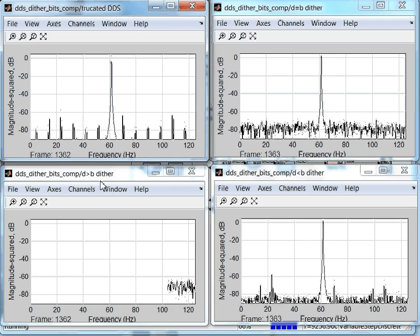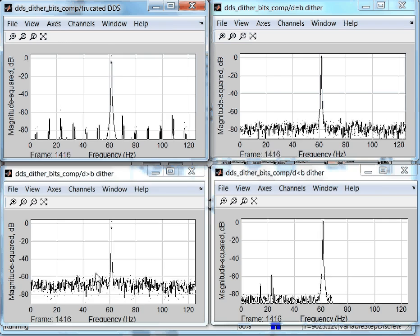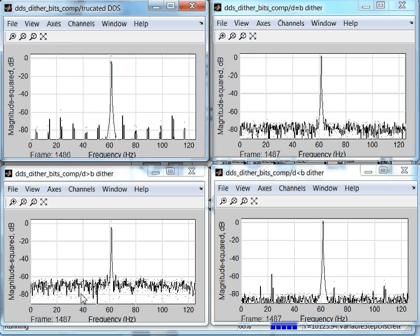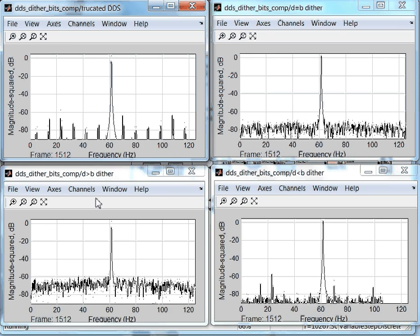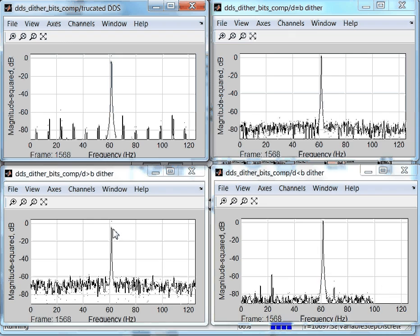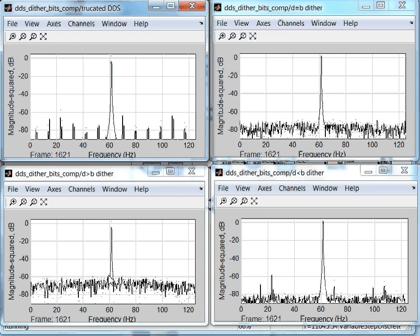Over here, we say, well, if 6 bits are good, maybe more is better. And the answer is actually no. When we add more than the number of fractional bits, the noise floor comes up too much. In this case, we've added 8 bits of noise. And we're back to having the original 60 dB of performance.